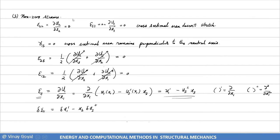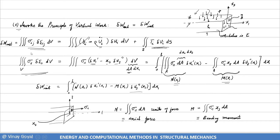We calculated the non-zero strains and showed the only non-zero strain is epsilon_11, where epsilon_11 equals U1_prime minus U3_double_prime times X3. Then calculating delta epsilon_11 and invoking the principle of virtual work, the only surviving term gives us N (axial load) and M (bending moment). There's no gravity assumed here, so bi equals zero. We expanded everything to demonstrate that N is axial load and M is bending moment — that's where the section-cut quantities from mechanics of materials come from.